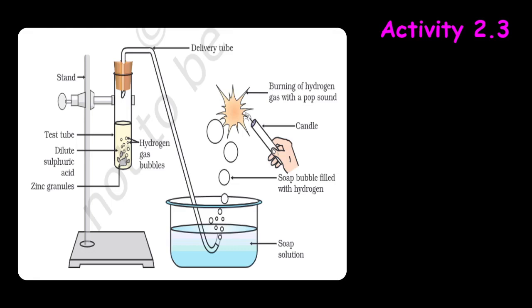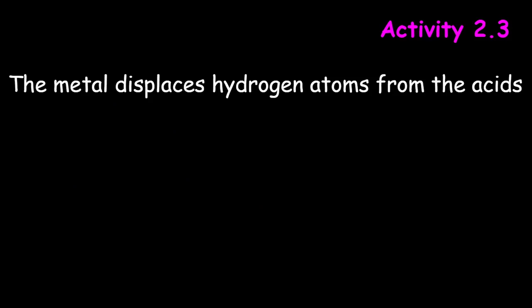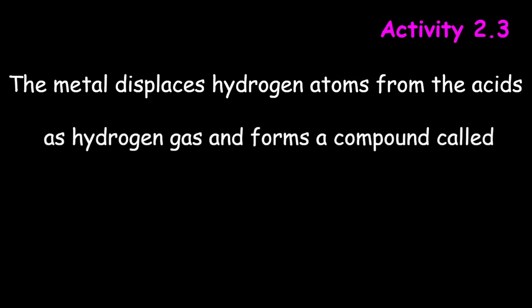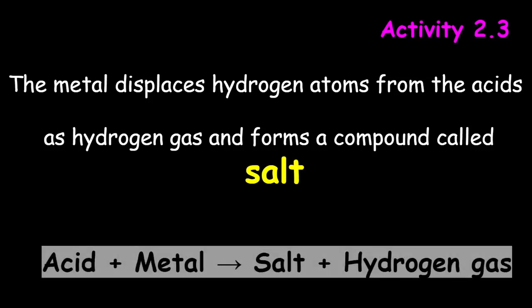Note that the metal in the above reactions displaces hydrogen atoms from the acids as hydrogen gas and forms a compound called a salt. Thus, the reaction of a metal with an acid can be summarized as: acid plus metal gives salt plus hydrogen gas.